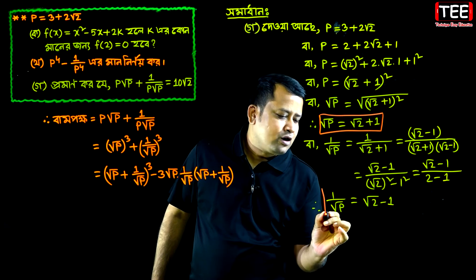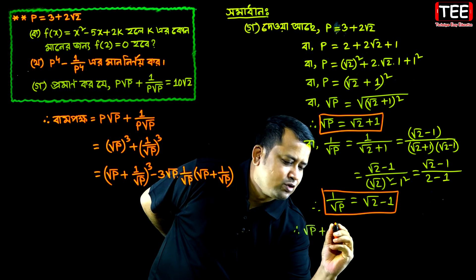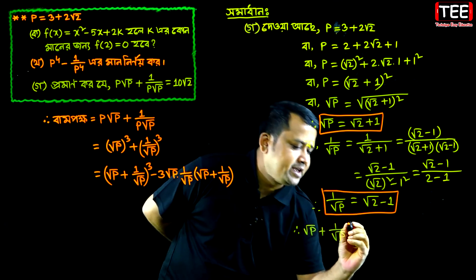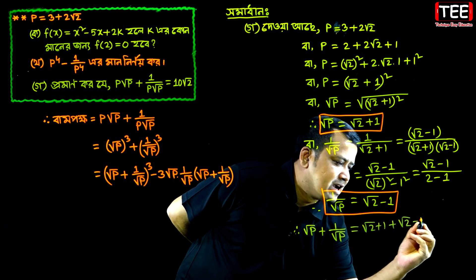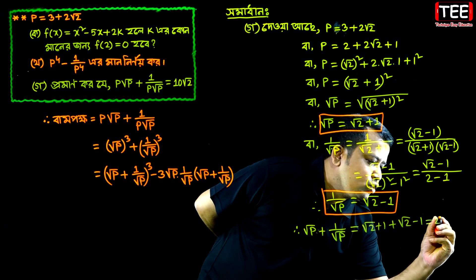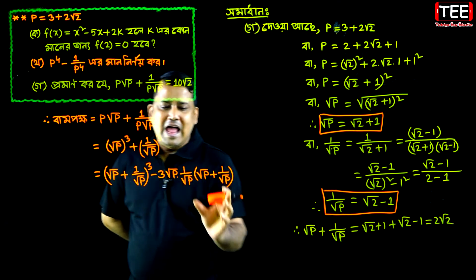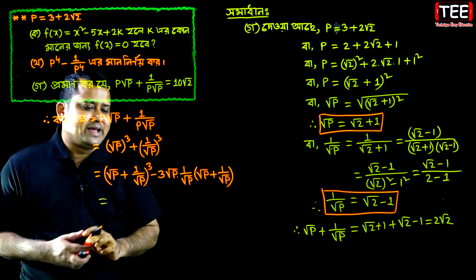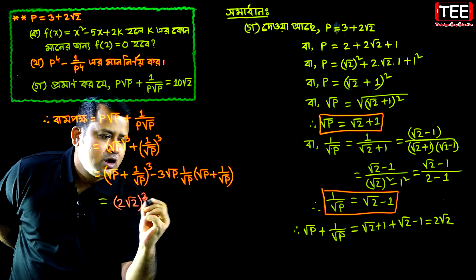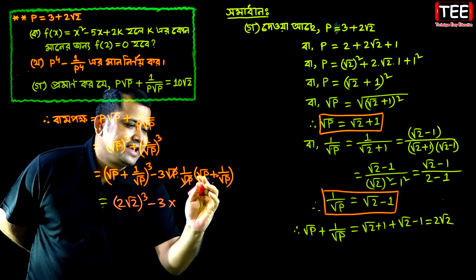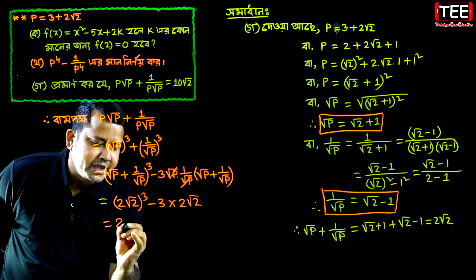So 1 by root p equals root 2 minus 1. Then root p plus 1 by root p equals root 2 plus 1 plus root 2 minus 1, and the 1s cancel out, leaving root 2 plus root 2, which gives 2 root 2.